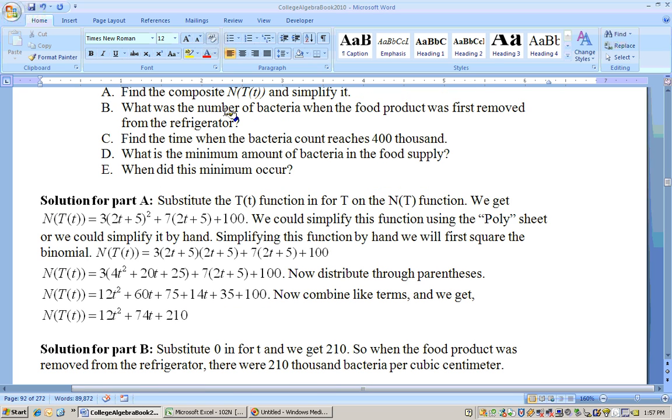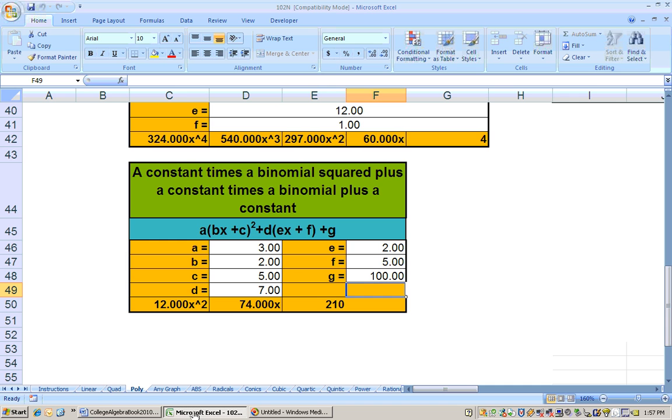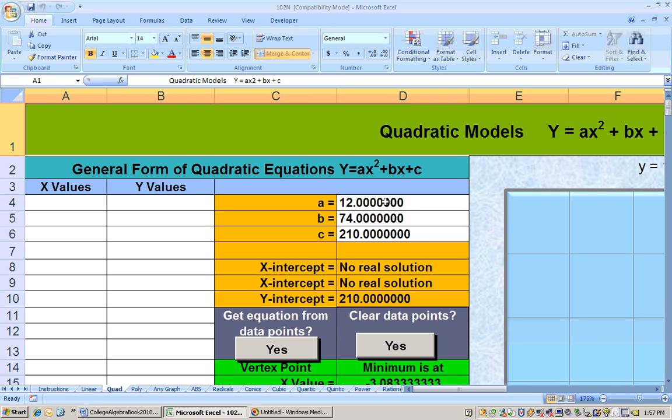The extra parts of this was to find out the number of bacteria when the food was first removed and other things that deal with this quadratic equation. I took these coefficients for this quadratic equation and typed them into the quadratic sheet. Here on the quadratic sheet, I typed in my coefficients, which are 12, 74, and 210.